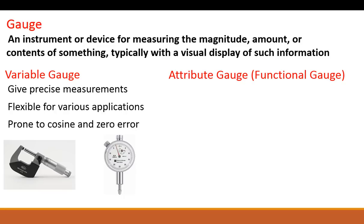On the left you've got a pair of micrometers and on the right a dial indicator — both are variable gauges. With the micrometer you've got a drum that gives you your reading; you tighten down your anvil, measure your part, turn the drum, and get your reading. With a dial indicator, this needle or probe travels in and out. If you set it at a fixed position, you can move things underneath and see how much they vary — the needle indicates how much it varies from a set zero point.